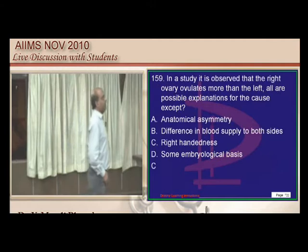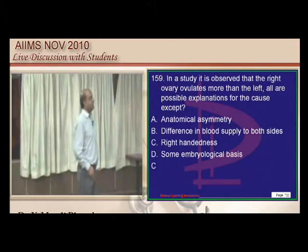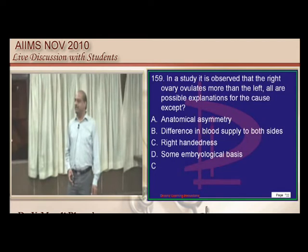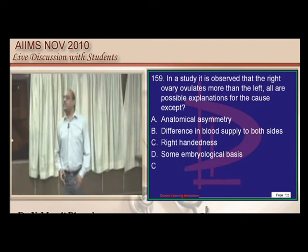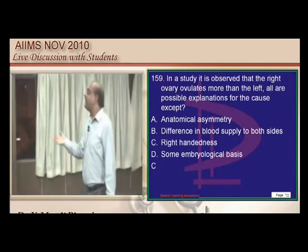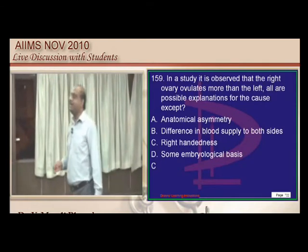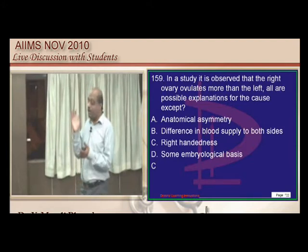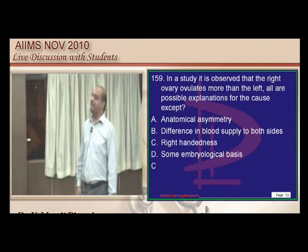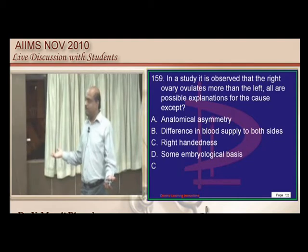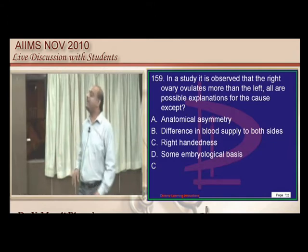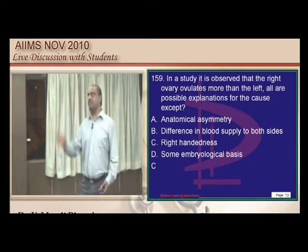Regarding biological plausibility: the right ovary is more active than the left — can right-handedness explain this? Consider the frog analogy: someone cut one leg of a frog and it limped; cut two legs and it limped more; cut three legs and it limped further. He then concluded that cutting legs makes the frog deaf — but it is limping because its legs are cut, not because of clapping.